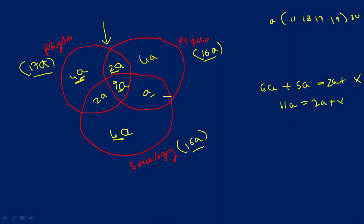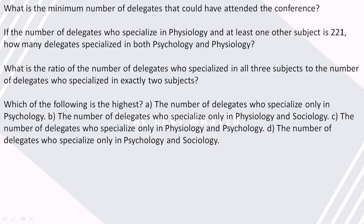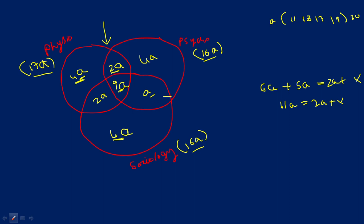What is the minimum number of delegates that could have attended the conference? The total comes out to 26a. With prime number values of 11, 13, 17, and 19, and we need the minimum value, so we take a = 11. Then 26 × 11 = 286. So our answer is 286.